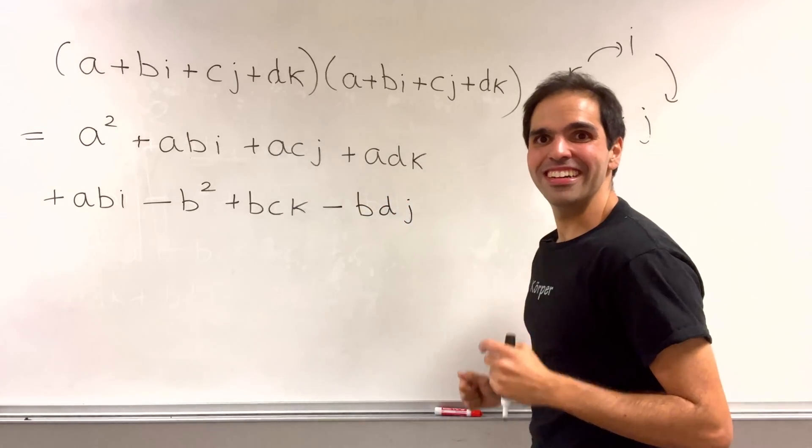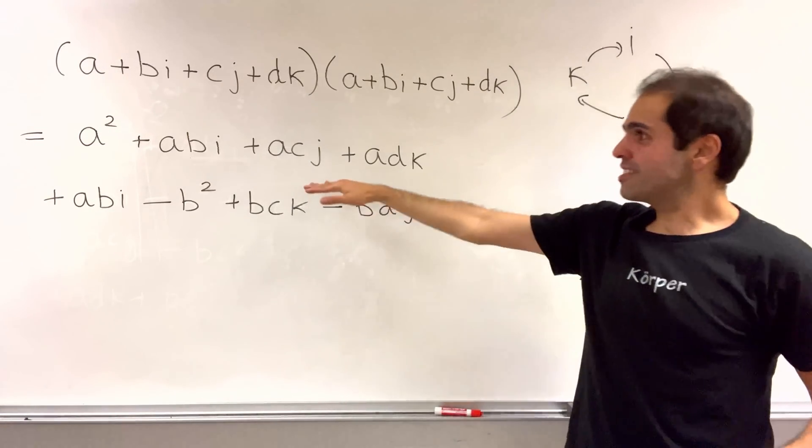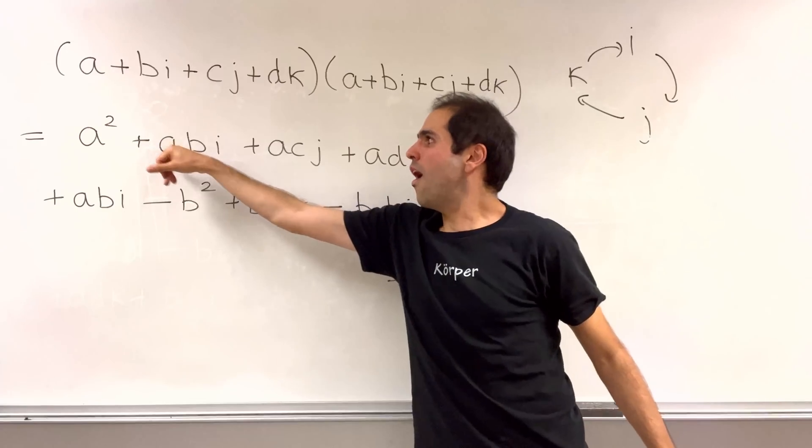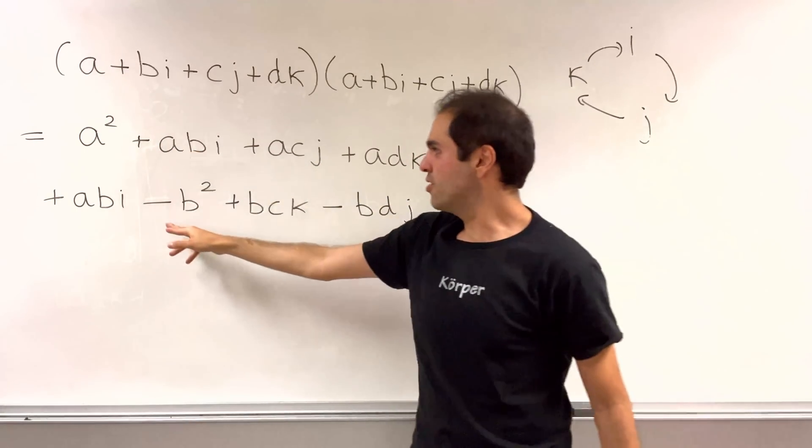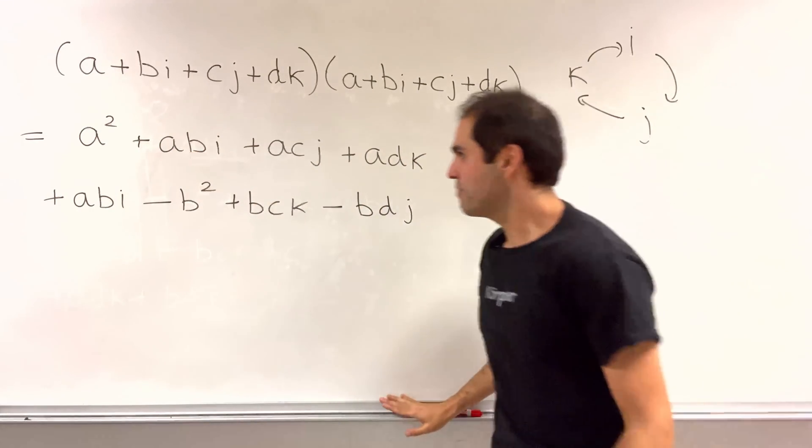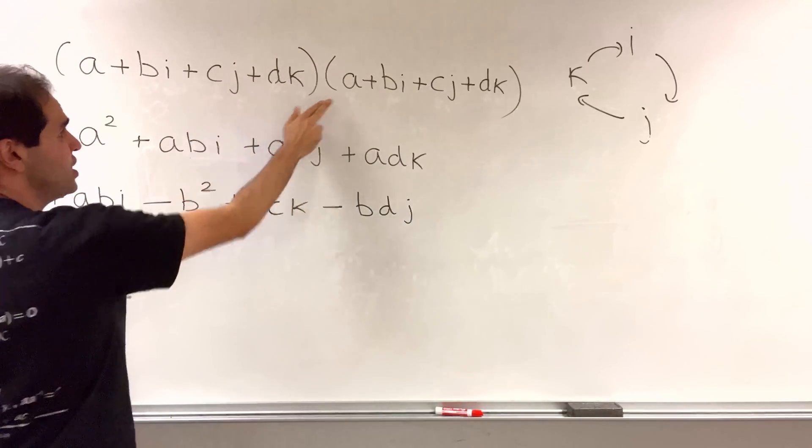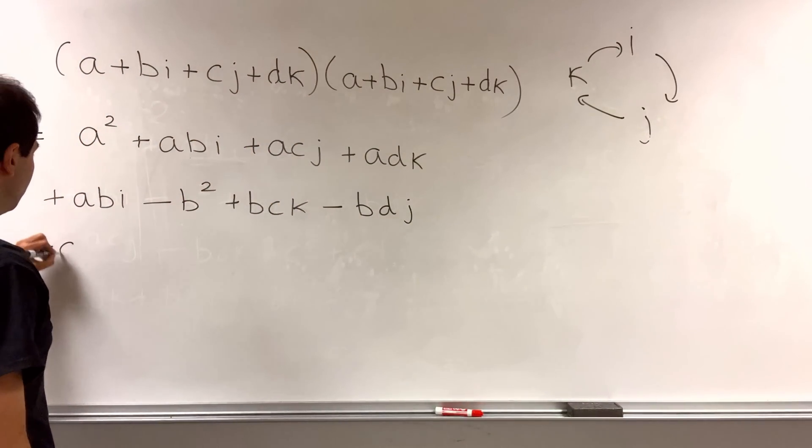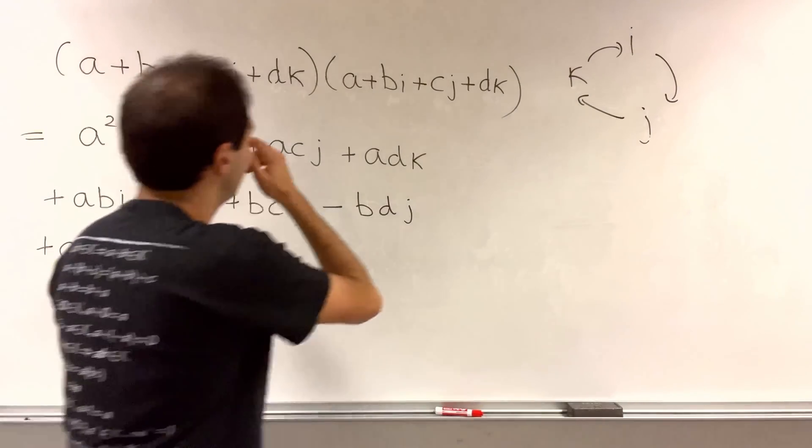And by the way, it's quite nice. There's always one ijk. And also here, one ijk. Check your work. Okay, next line. cj times a, so acj, right? So cj times bi, so bc, j times i, which is minus k, so minus bck.